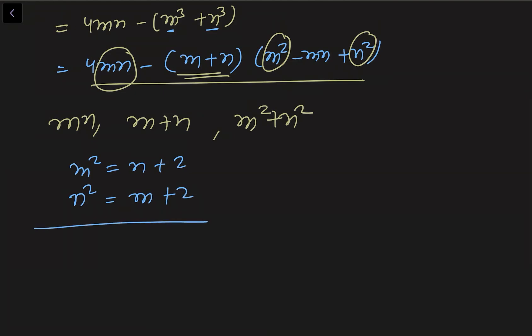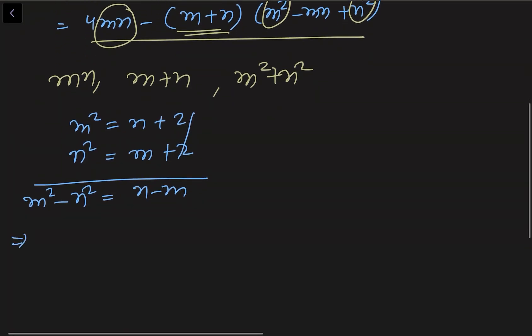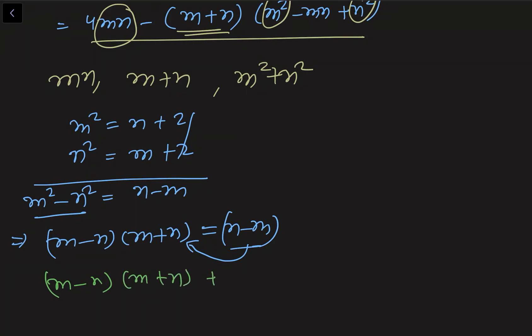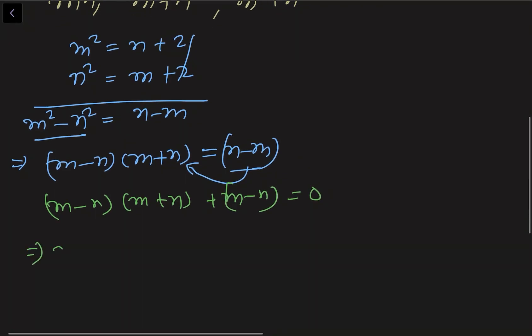Now if I subtract these two equations what I am getting is m² - n² = n - m. This 2, 2 got cancelled. So if I factorize this thing what I am getting is (m - n)(m + n) = n - m. Now if I move this term to this side what I will get: (m - n)(m + n) + (m - n) = 0. Now take (m - n) common. What I am getting: (m - n)(m + n + 1) = 0.